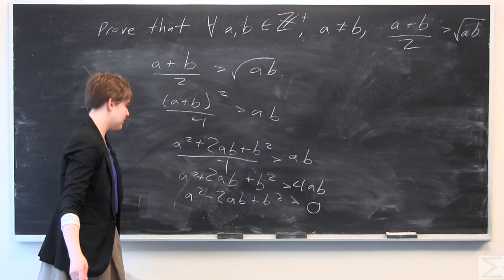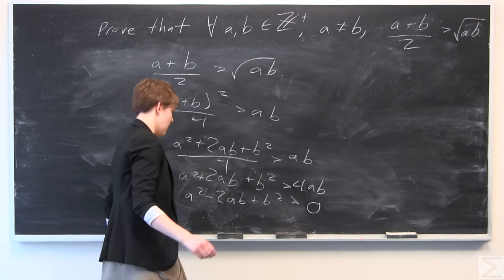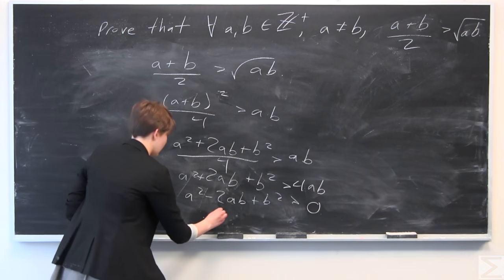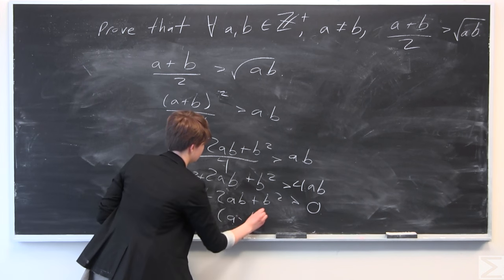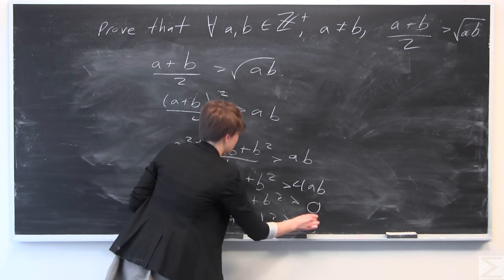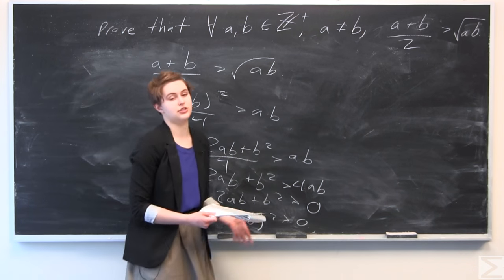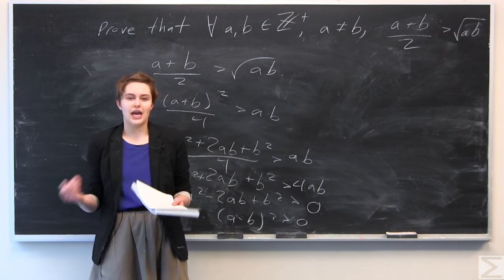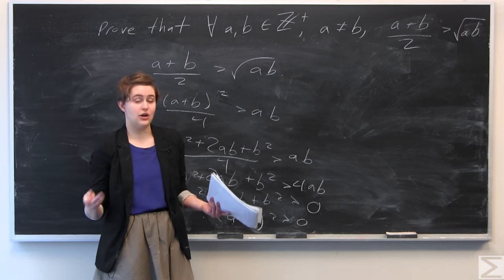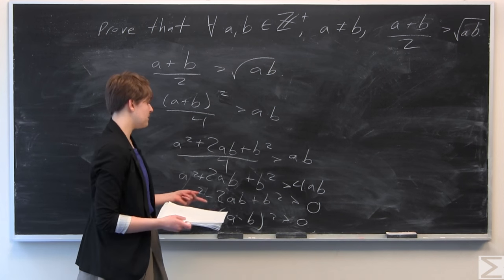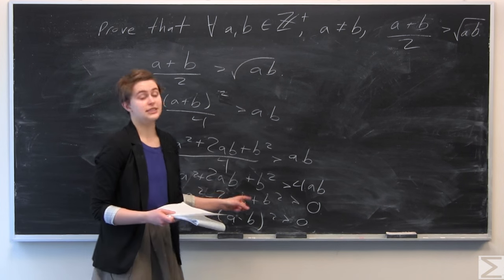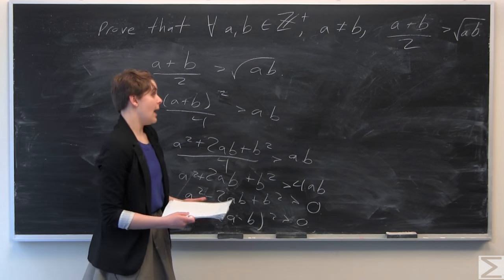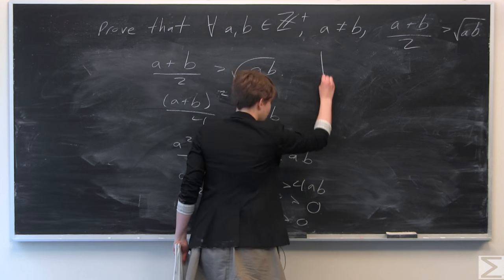Finally, we can factor this into a minus b, quantity squared, is greater than 0. We know that a minus b quantity squared is always going to be true for a and b positive integers where a is not equal to b. So it looks like we can start from a not equal to b and work our way back using the same method.